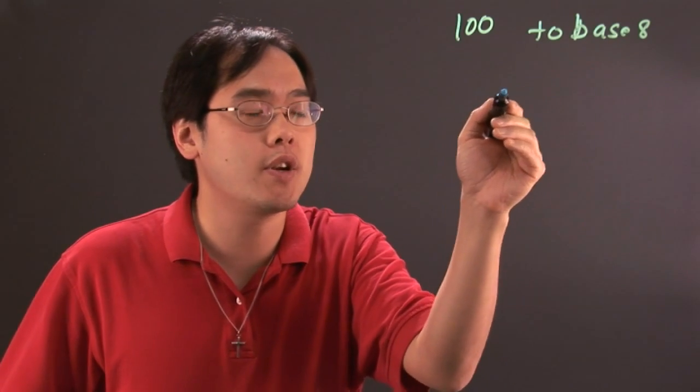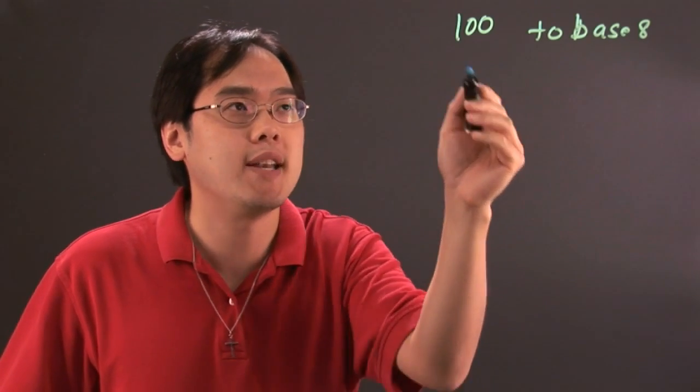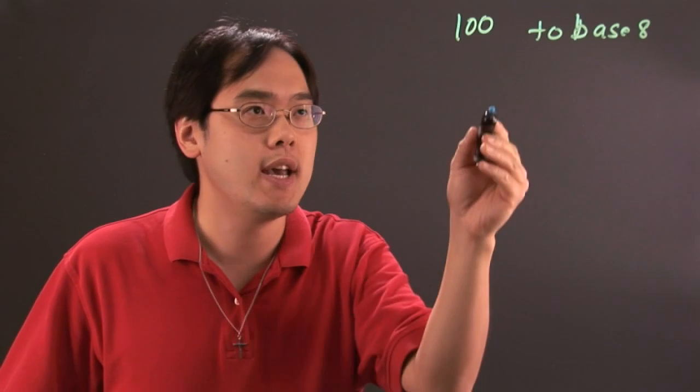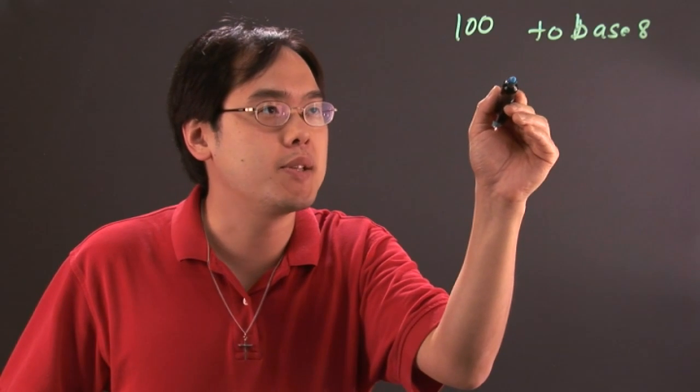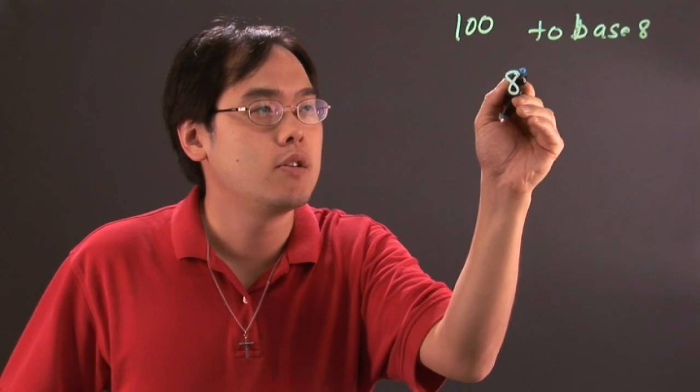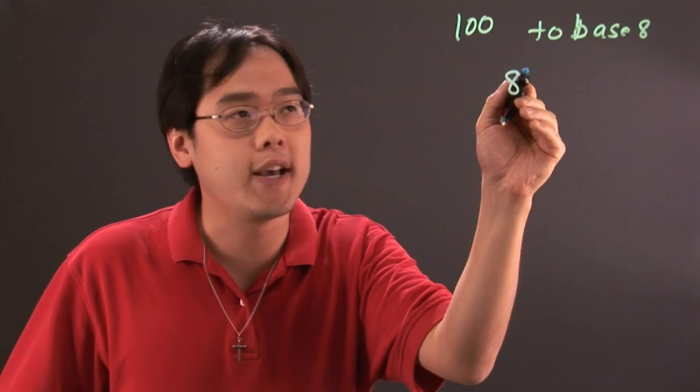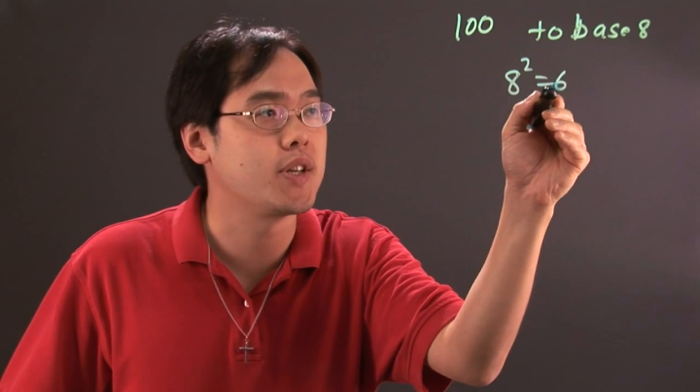Now what we're going to do first is we're going to think about the largest power of 8 that will go into 100. Now think about this as 8 to the third is too high, so we're going to go with 8 squared which is going to be 64.